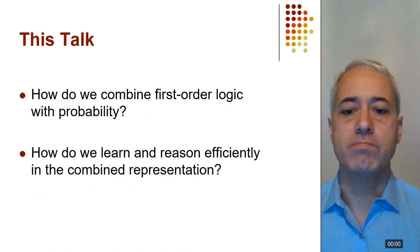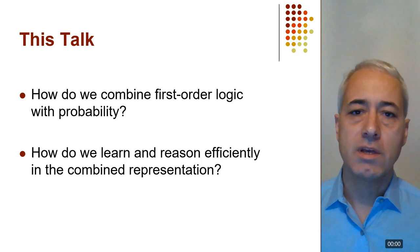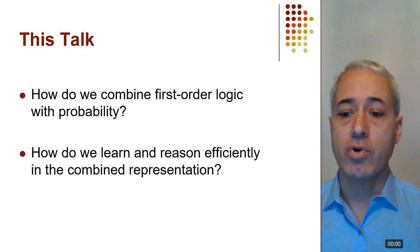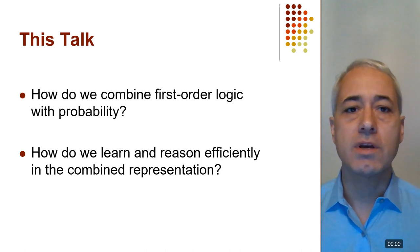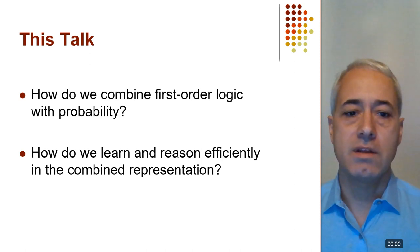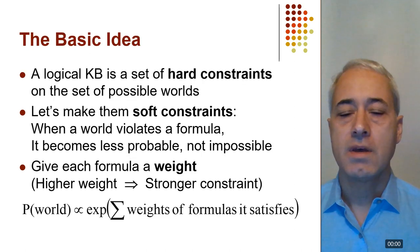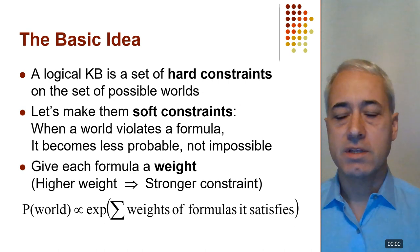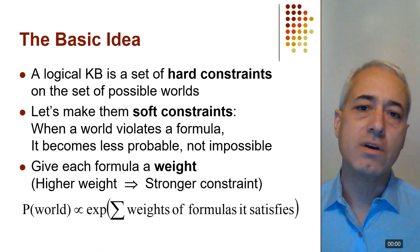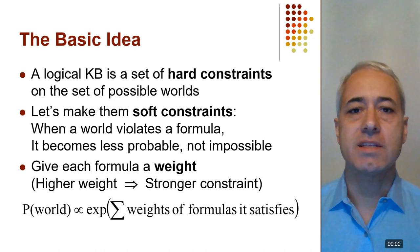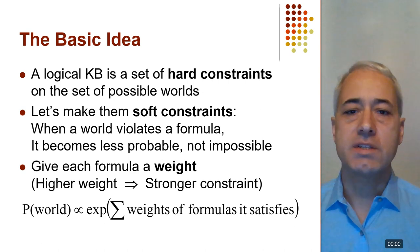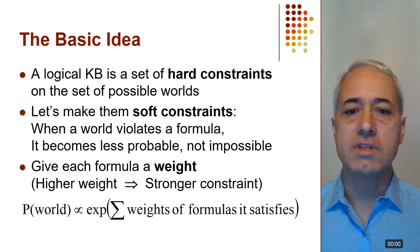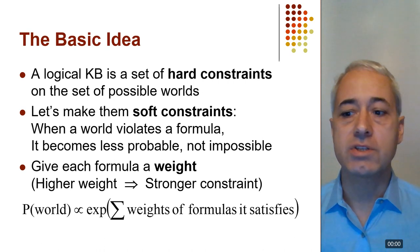How do we combine first-order logic and probability into a single coherent representation language, and equally important, once we have that language, how do we learn and reason efficiently in it? The basic idea is very simple. You can think of a logical knowledge base as a set of hard constraints on the set of possible states the world could take. As soon as one constraint is violated, the world becomes impossible, and that's what makes logic so brittle.